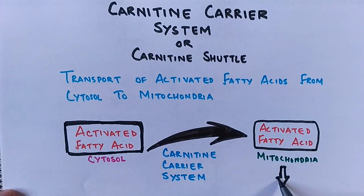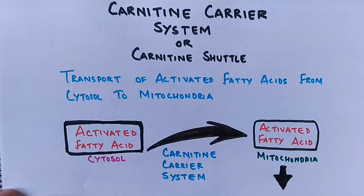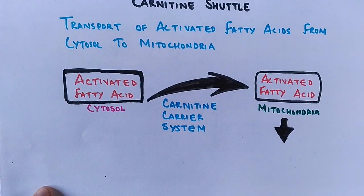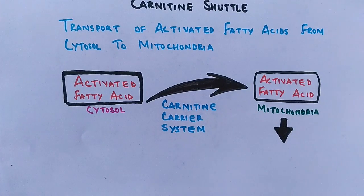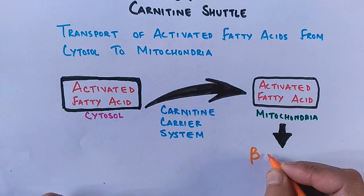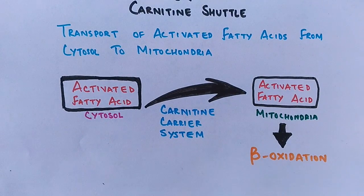After getting into the matrix, whether it is a long chain fatty acid or short chain fatty acid, there is always beta oxidation — that is, the degradation of fatty acids.